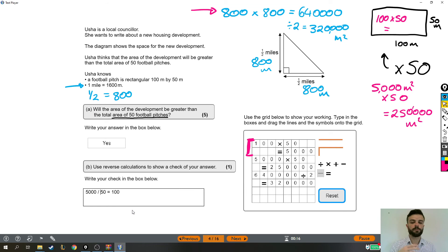We then have to compare that to the area of the development, which we did by finding the area of that triangle. Area of a triangle is base times height divided by two, but we had to convert the distances from miles into meters so that we had units that we could compare. So we converted them, found out that each one was 800, base times height divided by two then gave us that area, and that was enough for us to decide that yes, the development is bigger than 50 football pitches.